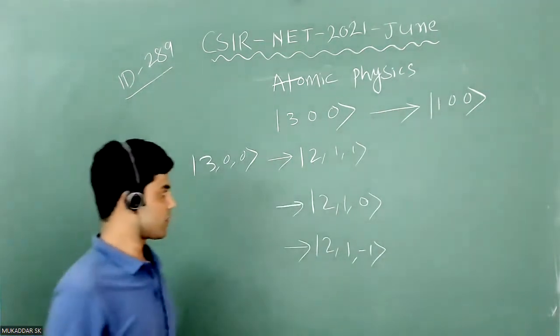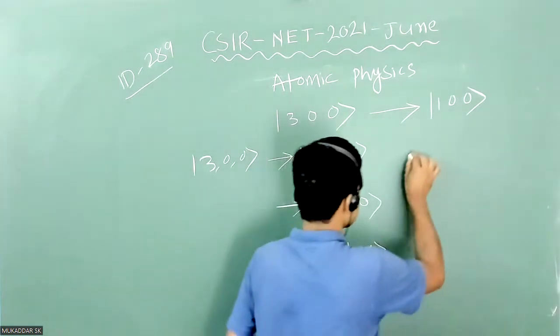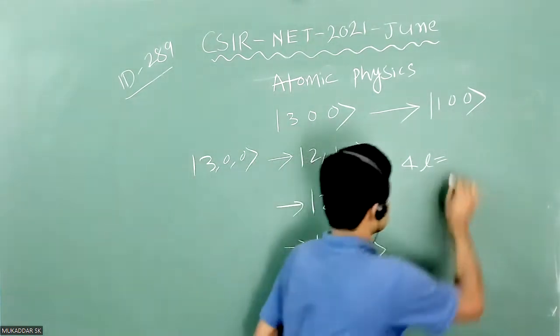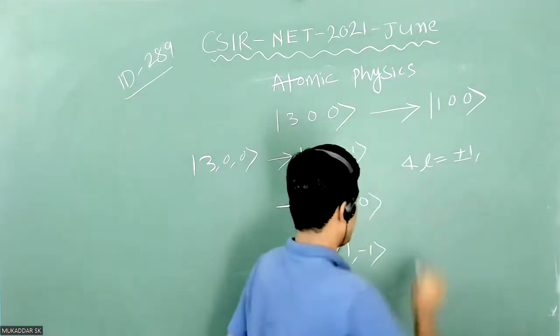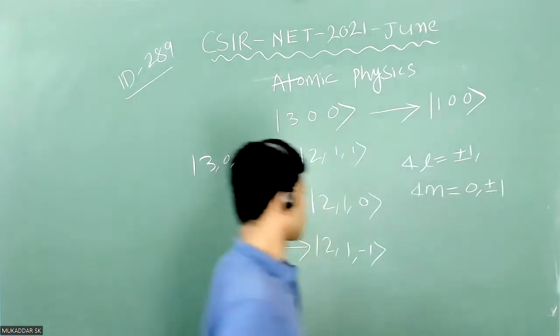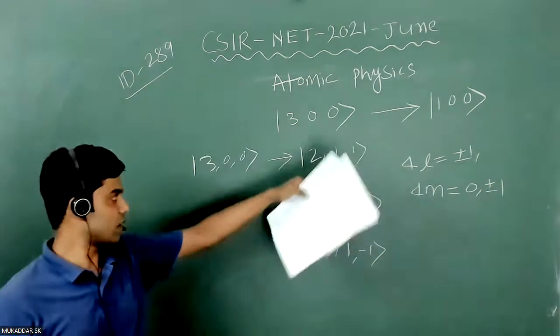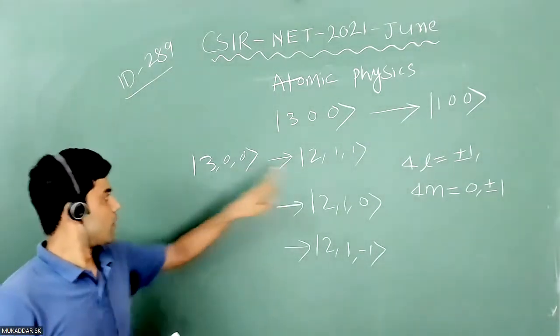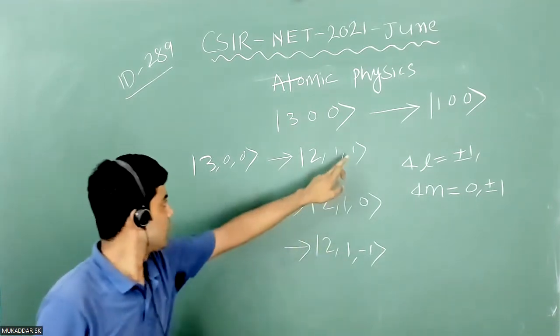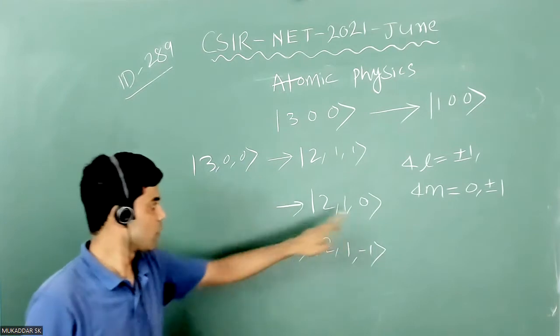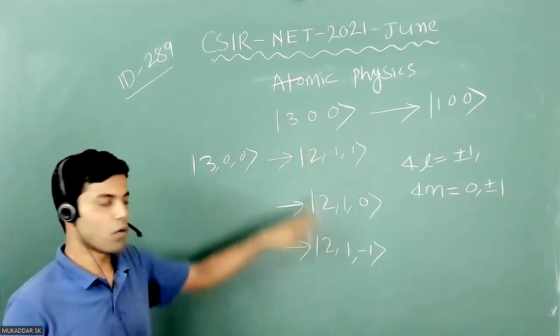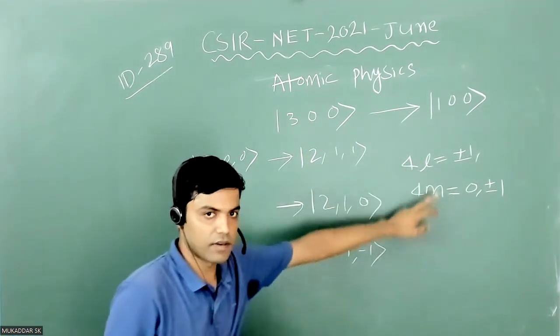And the selection rule for this transition will be delta L is nothing but plus minus 1, and delta M can be 0 plus minus 1. So it is satisfying that for this decay also delta L is 1, for this decay also delta L is 1. And you see delta M for this decay is plus 1, for this decay is 0, and for this decay is minus 1. So all the three decay modes are satisfying that or following that selection rule.